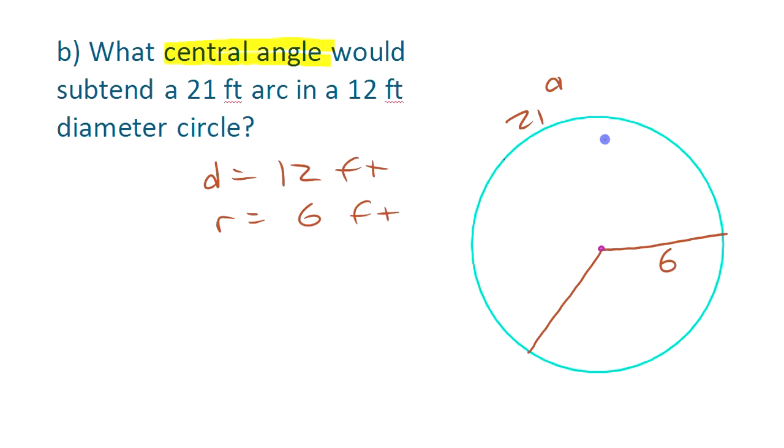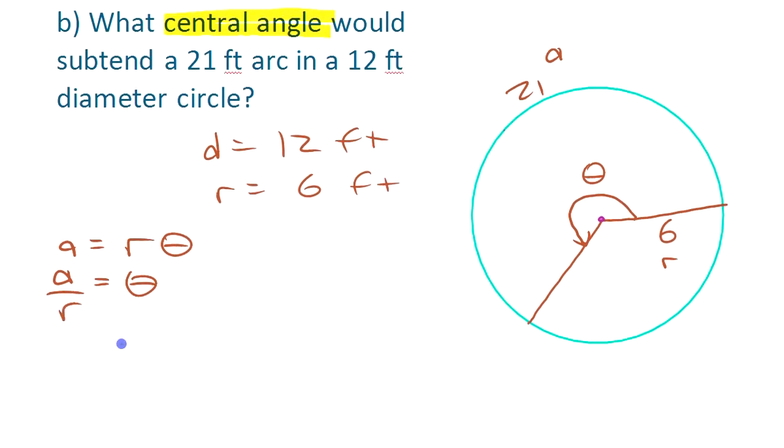If this is our A value, our arc length, this is our radius here, and what we're looking for is that central angle, which we can call theta again, we can use that formula that we had. Arc length is r times theta, or solve it for theta—theta is arc length over radius. If you sub in your values, it's pretty quick and easy to get it. Theta is 21 over 6.